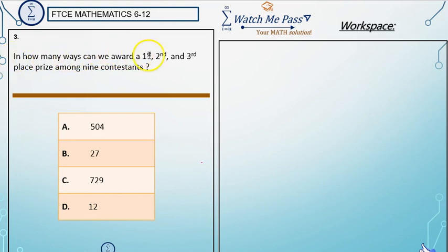In how many ways can we award a first, second, and third place prize among nine contestants? Well, let's take a look.